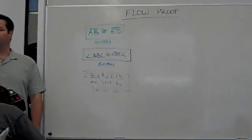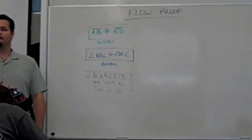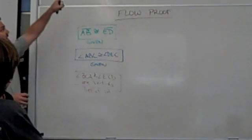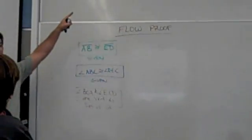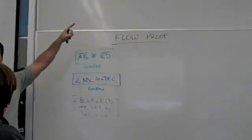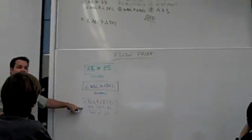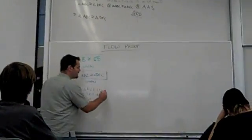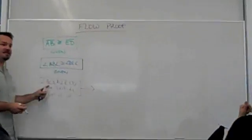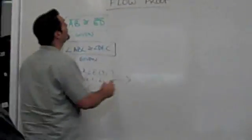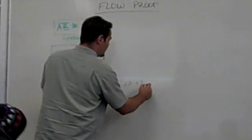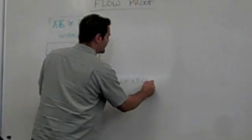So far it doesn't seem any different. Here's where the power starts to come in with this format. Step four had a prerequisite — a step that must have been in place to say it. So what we're going to do is take an arrow going from this step, saying this step leads directly into the fact that angle BCA is congruent to angle ECD.